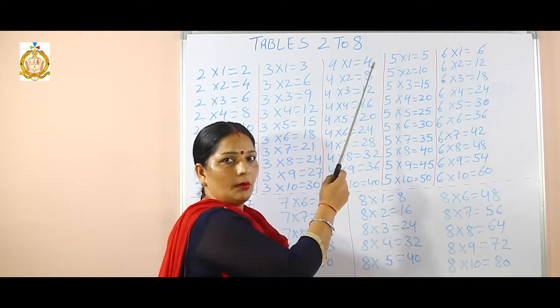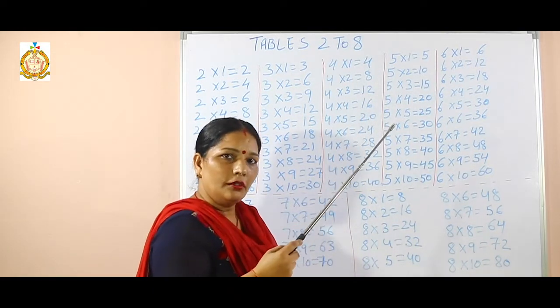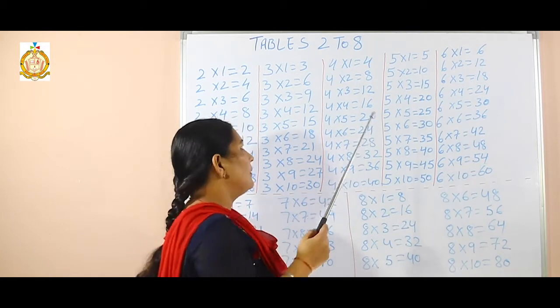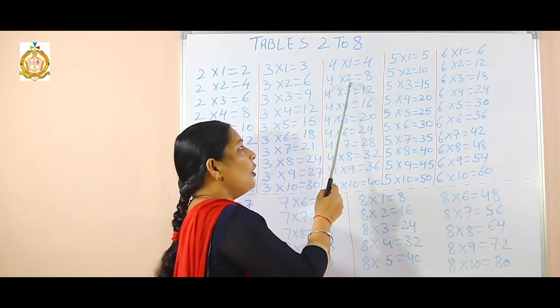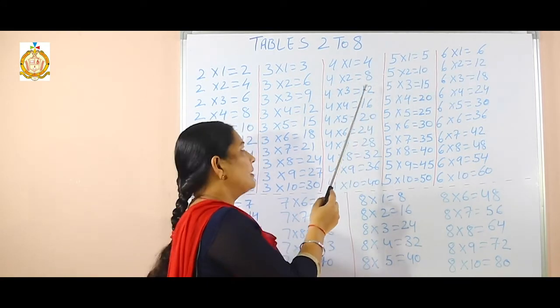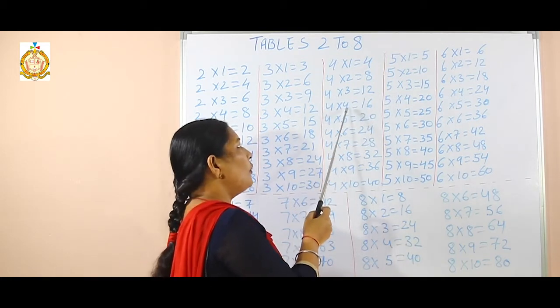Now come on the table of 4. All of you have to repeat with me. 4 ones are 4, 4 twos are 8, 4 threes are 12, 4 fours are 16.